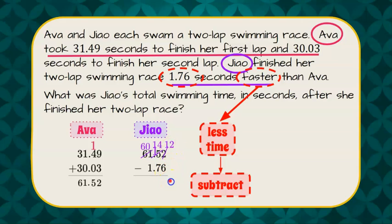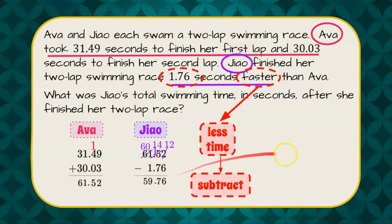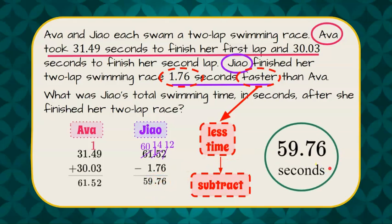12 subtract 6 is 6, 14 subtract 7 is 7, bring down your decimal point, and 60 subtract 1 is 59. So there you have it — Zhao finished her two laps in 59.76 seconds.